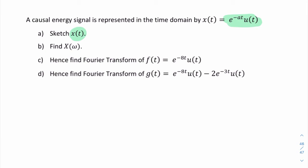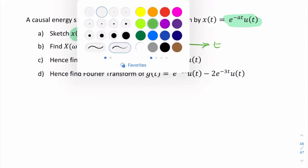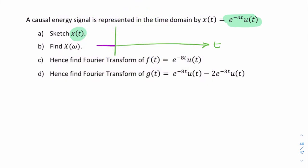So X of t looks like it's the product of a one-sided decaying exponential and a unit step. So the unit step simply means that we're looking at the positive time axis. So everything in negative time will be zero. So e to the minus a t. Now if we assume a is positive, e to the minus a t is going to be a decaying exponential. So it will start at e to the power zero is one and it will decay as such. So that's the first part.